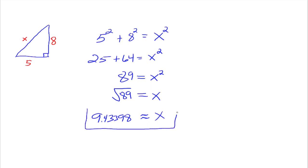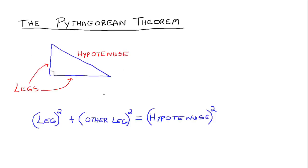That is how we can use the Pythagorean Theorem to help us find lengths of right triangles. The thing to remember is the relationship between the three sides: leg squared plus other leg squared is equal to hypotenuse squared. Any time you have a right triangle, you can use this relationship between those three sides to solve whatever it is you're trying to solve. Study well — please let me know if you have any questions.